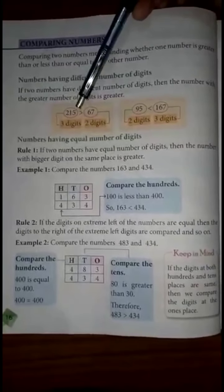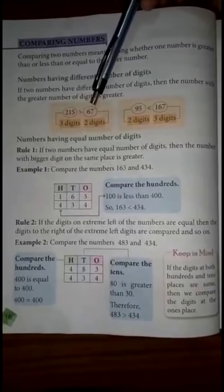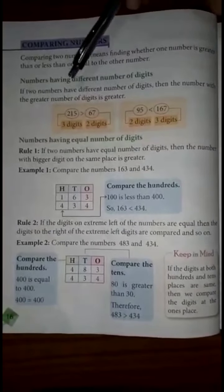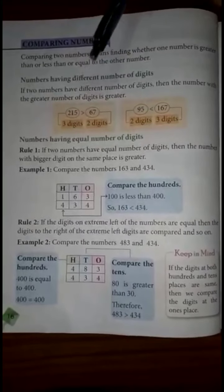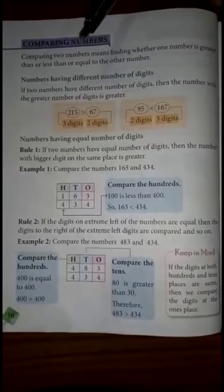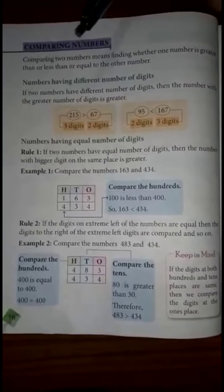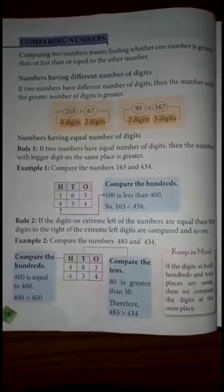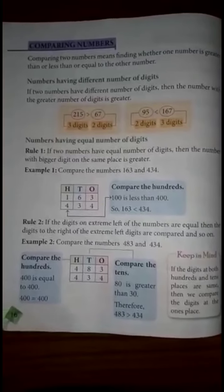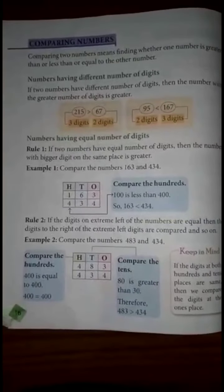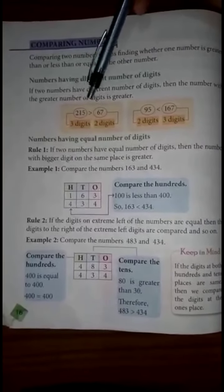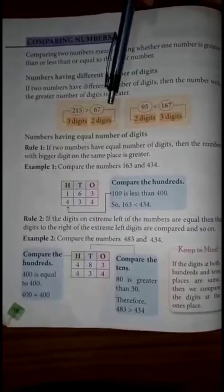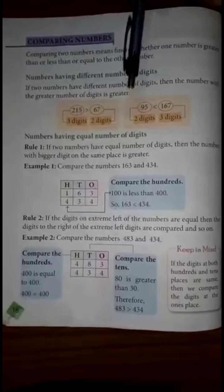For example, 215 and 250 — 250 is greater because it is a 3-digit number. This was the first rule for numbers having a different number of digits.